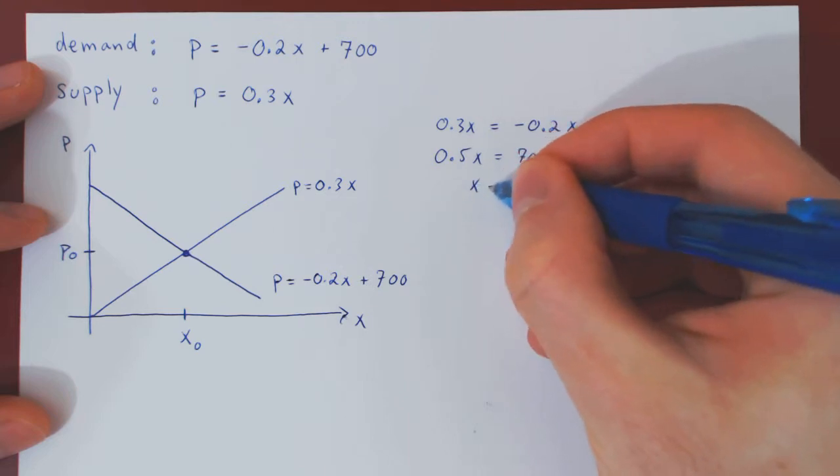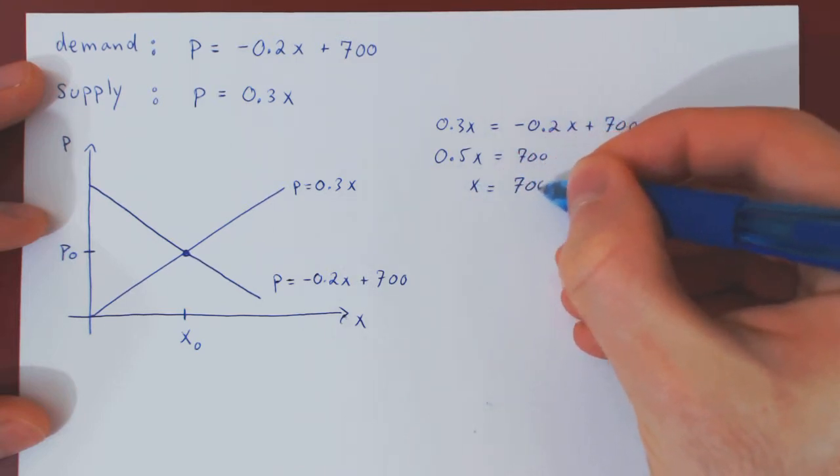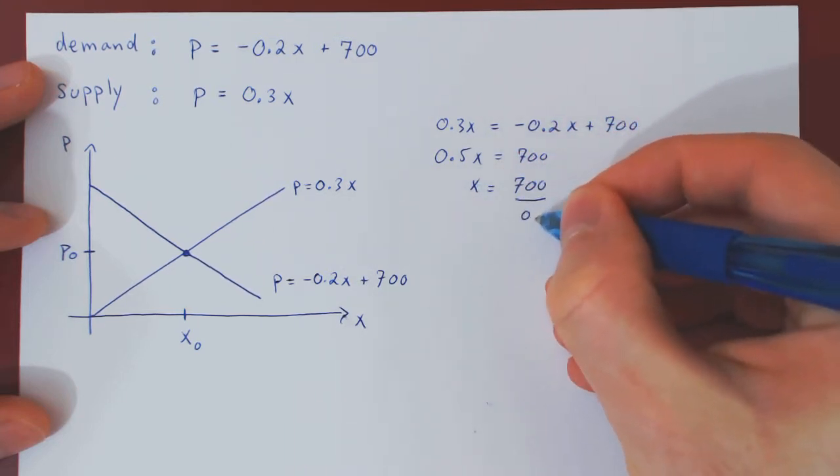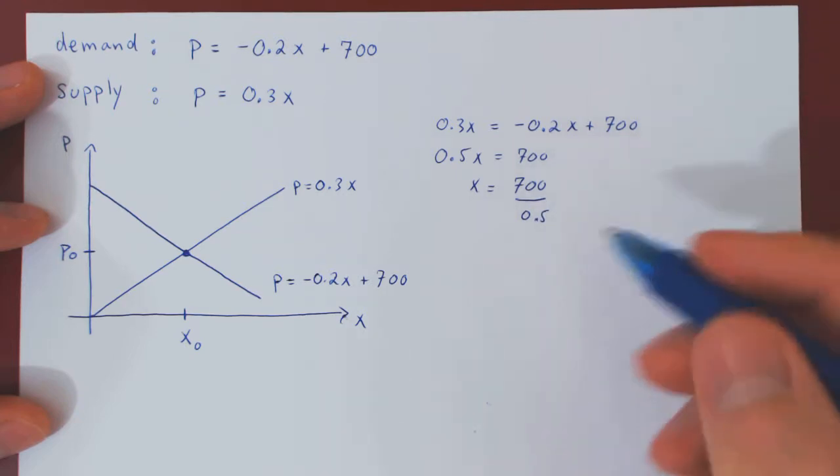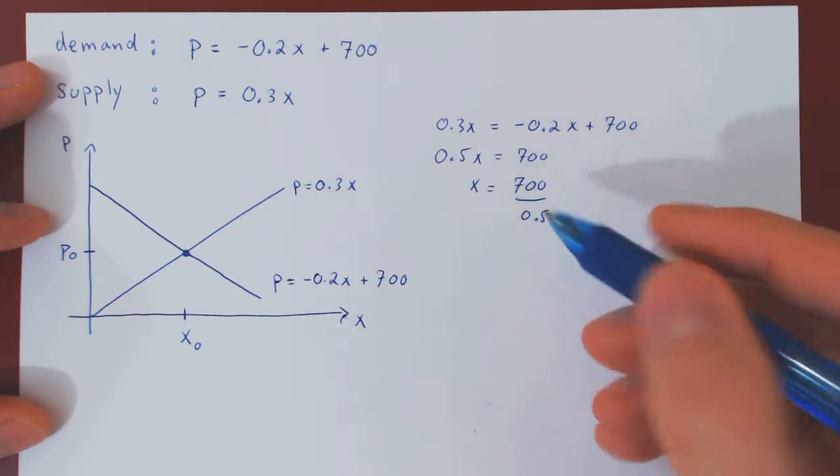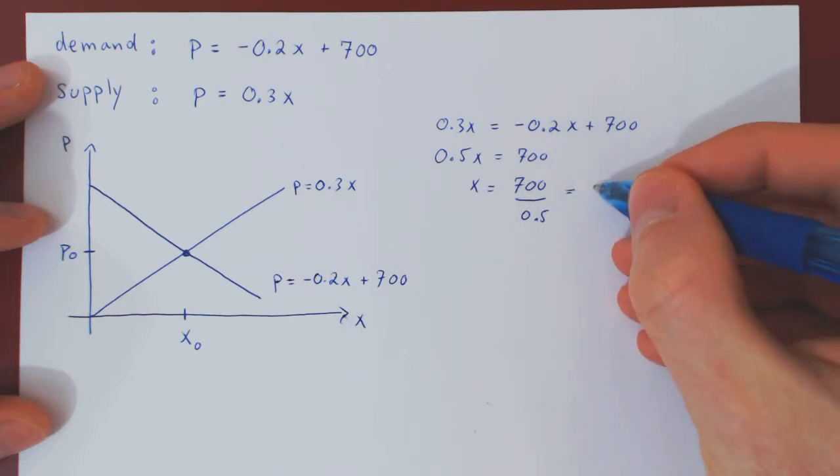Divide both sides by 0.5. If you divide by 0.5, same as multiplying by 2, so this will give us 1400.